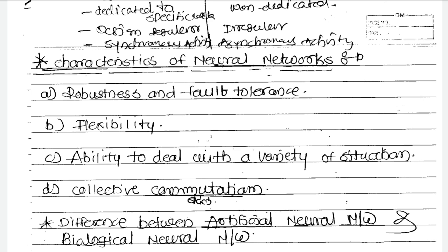Artificial neural networks are fastest in processing compared to biological neural networks, which are very slow. For example, take the calculation of some complex number — a machine can give you the answer within a fraction of a second. But with a biological neural network, we human beings probably cannot calculate a complex problem within that time.